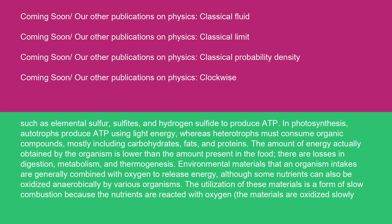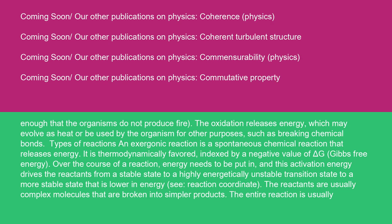The utilization of these materials is a form of slow combustion because the nutrients are reacted with oxygen. The materials are oxidized slowly enough that the organisms do not produce fire. The oxidation releases energy, which may evolve as heat or be used by the organism for other purposes, such as breaking chemical bonds.